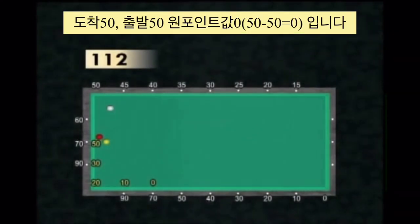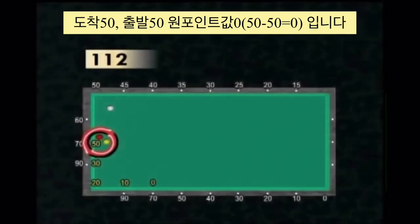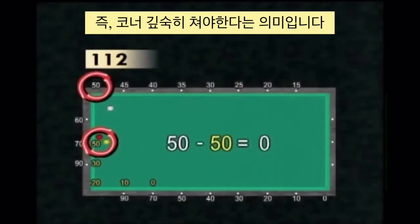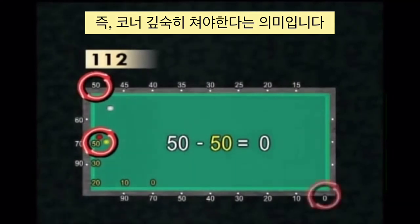This time with an arrival at 50 and a departure at 50, the player must aim for 0, which means a spot close to the corner.